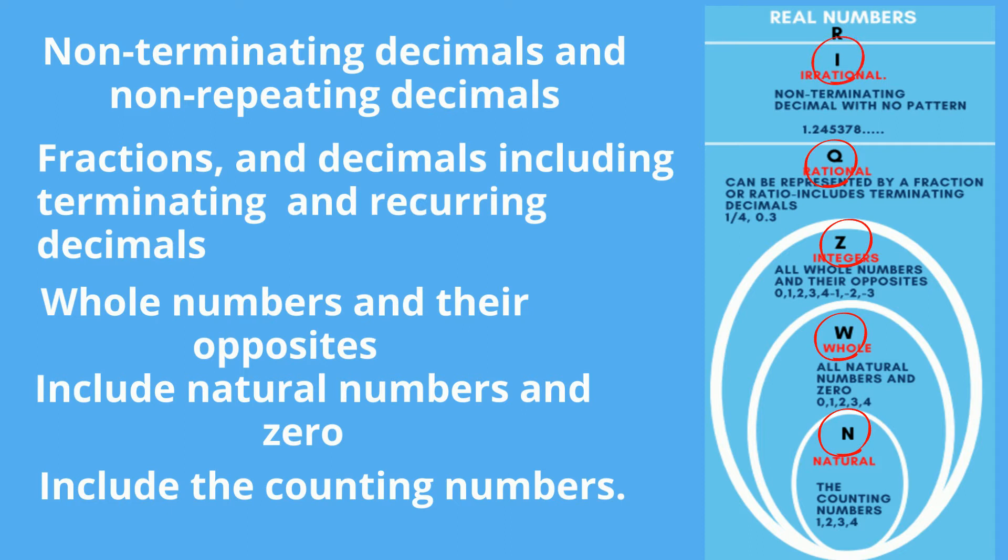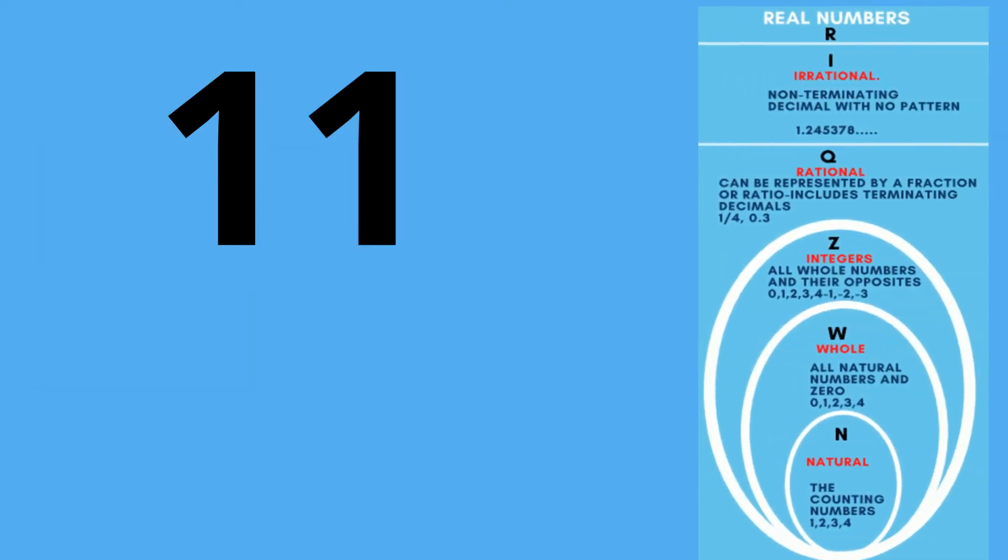Let's look at some examples and name the set or sets in which they belong. Up first we have 11. 11 is a natural number, a whole number, an integer, a rational number, and a real number. So it is NWZQR.